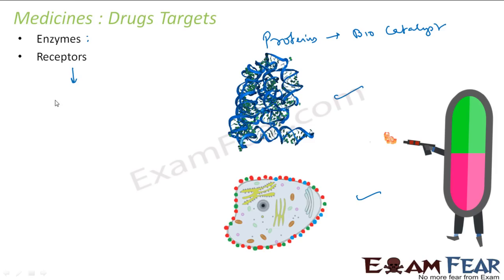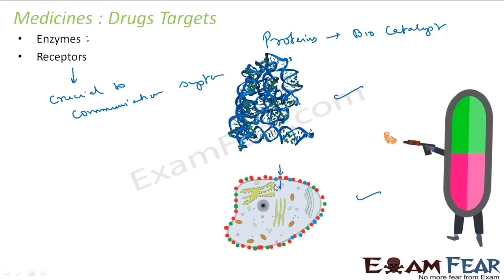Receptors are very crucial to communication. They are present on cell walls, and whatever message you want to pass, receptors will take it and pass it on to the cell. The message is nothing but a chemical — they are chemical messengers. The chemicals touch these receptors, receptors take that message and relay it to the cell. The chemical may not or should not go inside the cell.